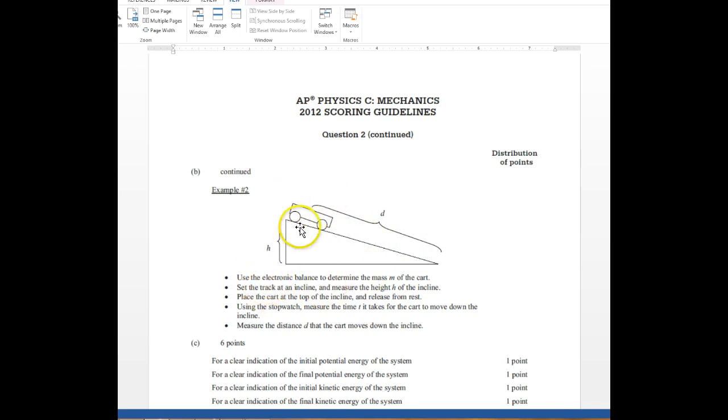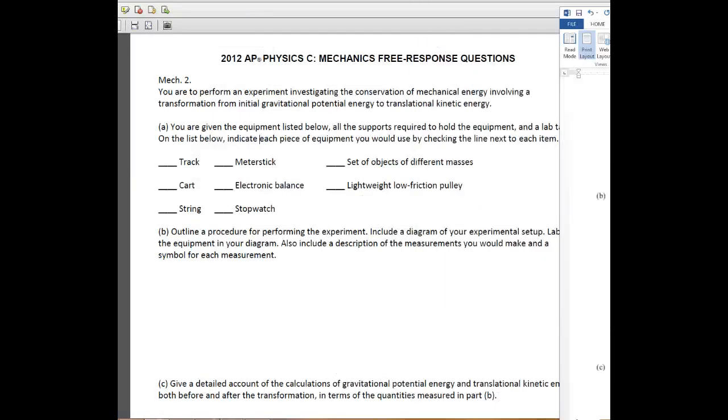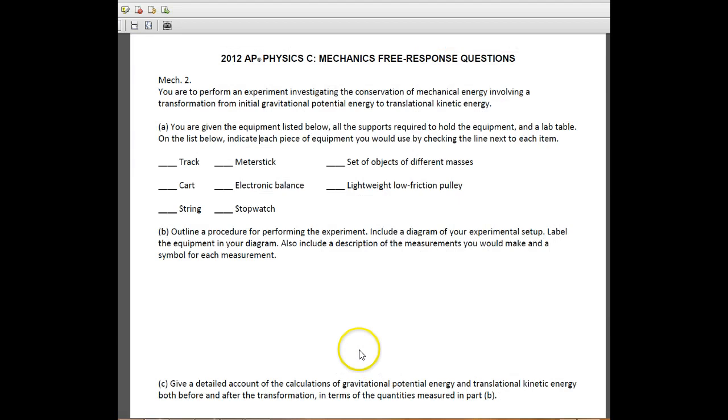You'd just use a balance to measure the mass of the cart. You'd start it at the top. You'd measure the height of the incline. You would then release it from rest, so your initial velocity is zero. You then use a stopwatch to figure out how long it takes to get down to the bottom. And then you measure that distance. So really that's all you need for this part of the problem.